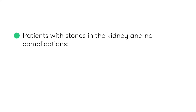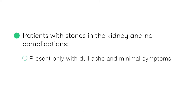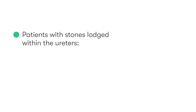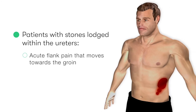Patients who have stones that remain in the kidneys themselves and have no associated complications tend to only complain of a dull ache and minimal symptoms. Often these stones may be identified as incidental findings during imaging investigations for other non-related conditions. However, in patients with stones that lodge within the ureters, they typically present with severe acute pain in their flanks that radiates down to the groin on the same side. We can remember this classic presentation as pain that is loin to groin.